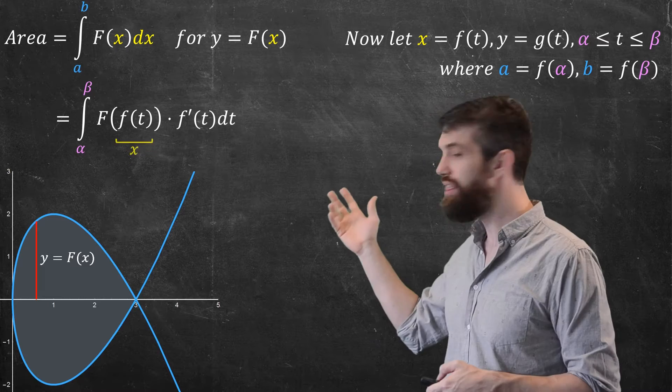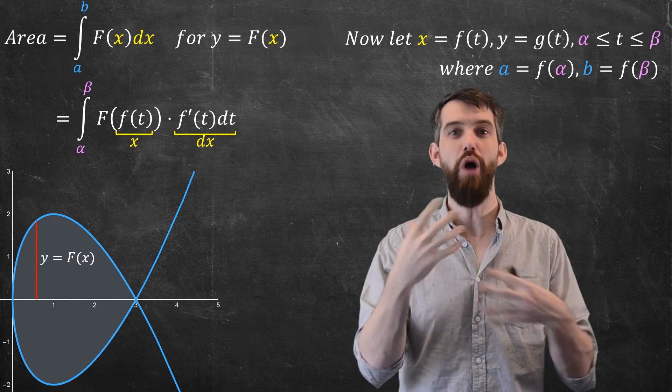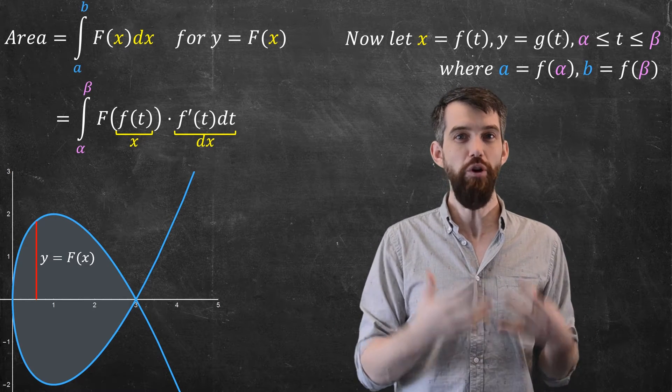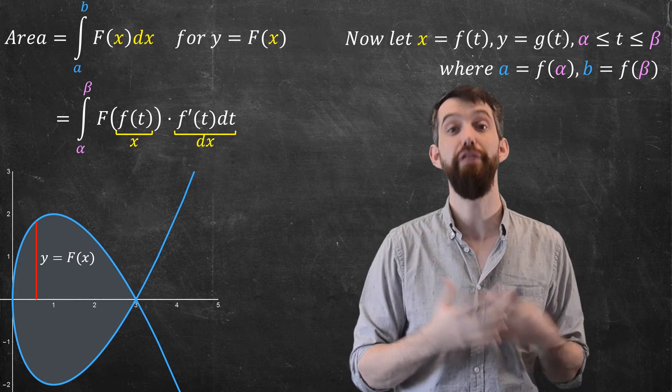And then if I look at what f prime of t dt is, well, that's going to be the same thing as dx. So if you apply the substitution rule to the second formula, you get precisely the first formula.